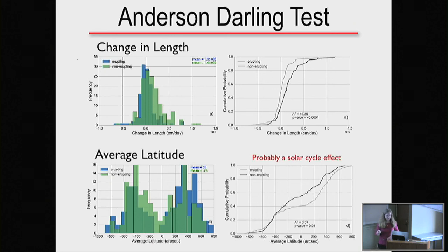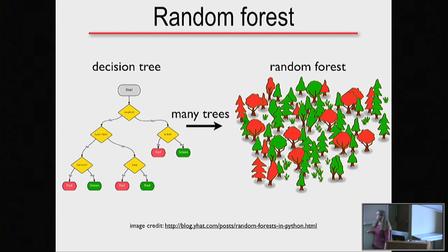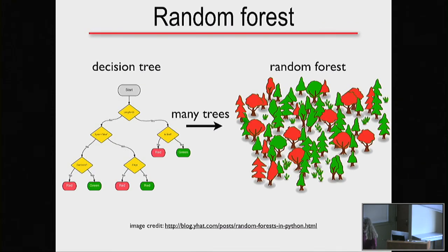We also did a random forest classifier. A decision tree takes your parameters, makes decisions about how to divide them, and produces a prediction. If you take a bunch of decision trees together and combine them, you can iron out some of the randomness — that's a random forest. We put all our metadata into the random forest.